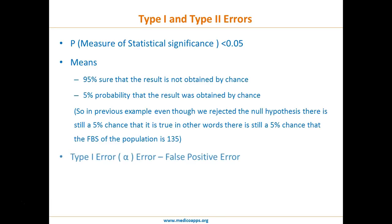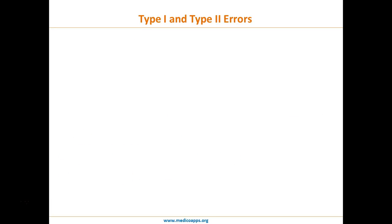When we do any kind of hypothesis testing we encounter two types of error. The first is Type 1 error, also called alpha error, which is the false positive error. The second is Type 2 error, also called beta error, which is the false negative error. Let me explain further with a diagram.